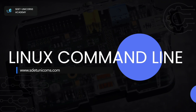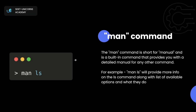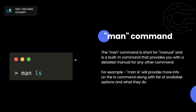There are two ways to get more information about a Linux command. The first one is the man command — short for manual — which is a built-in command that provides detailed information for any other command. For example, if you want to learn more about the ls command, you can simply type man ls and it will give you more information along with all of the options and arguments available.